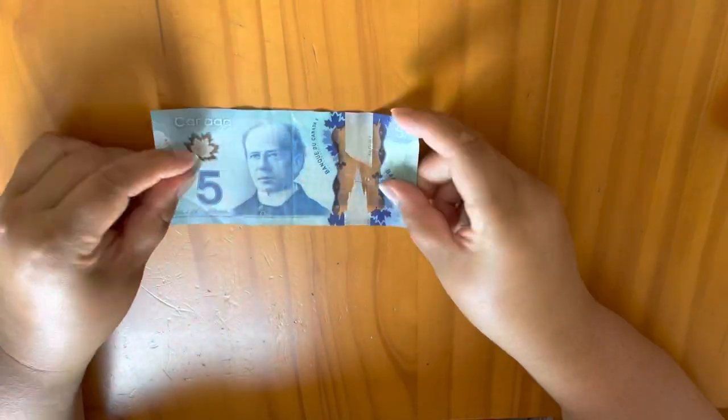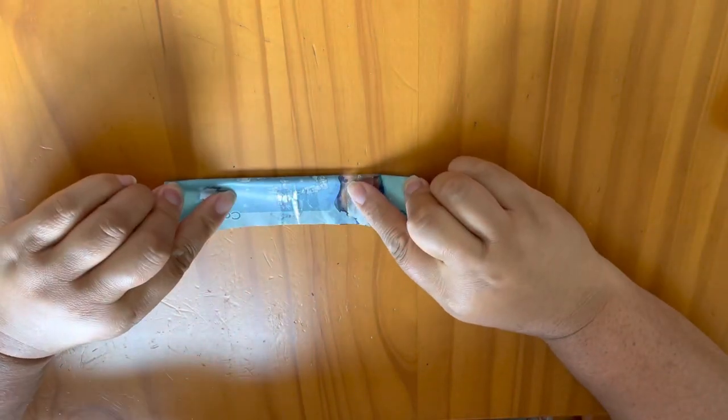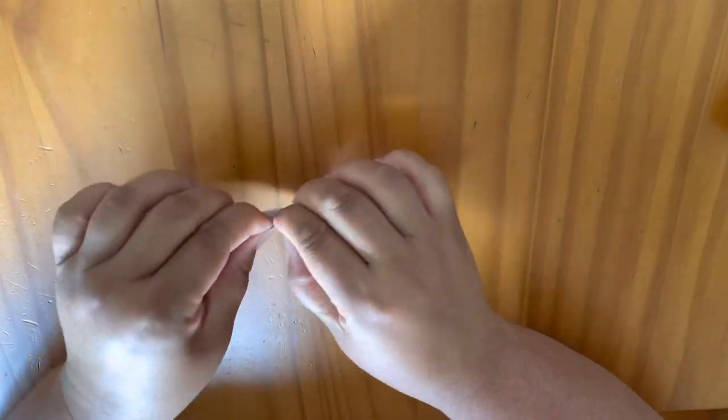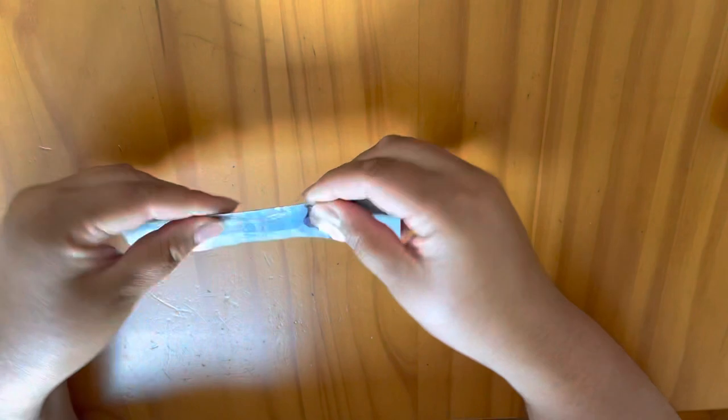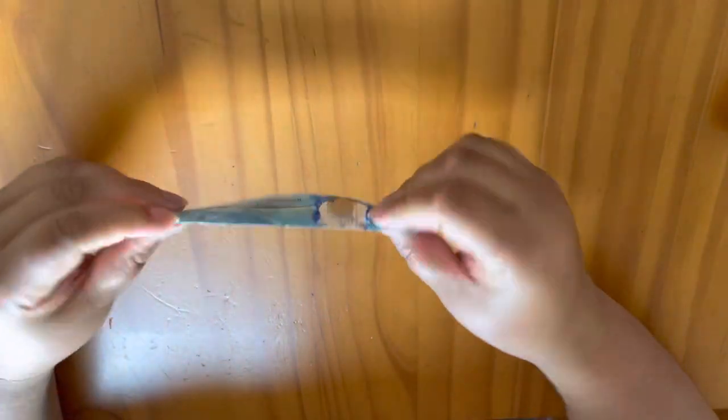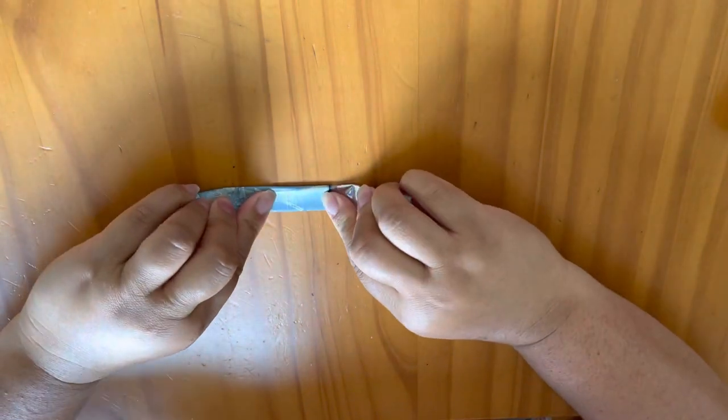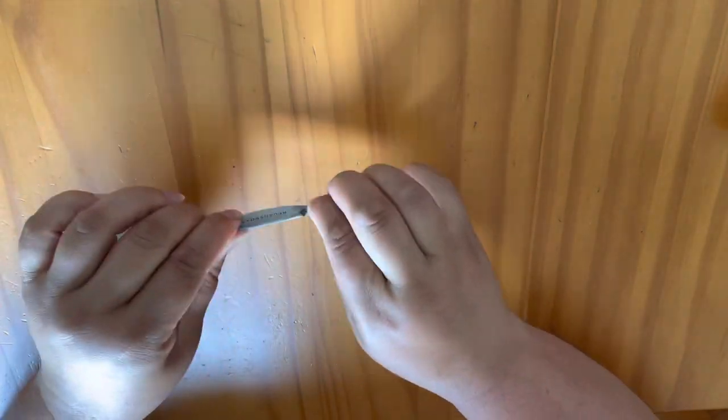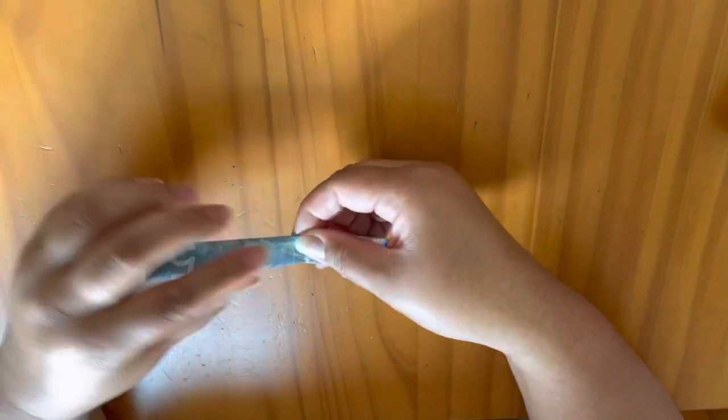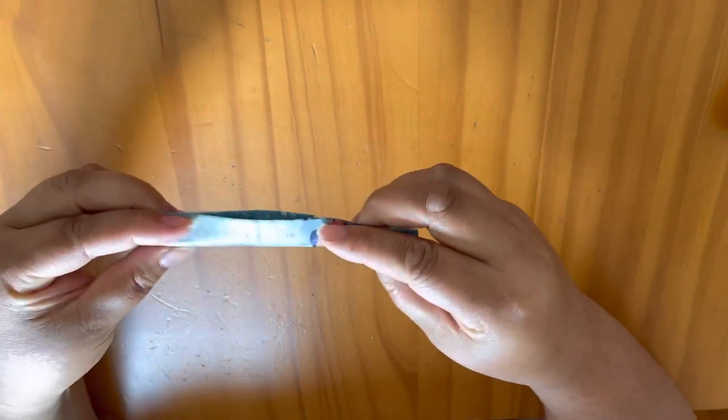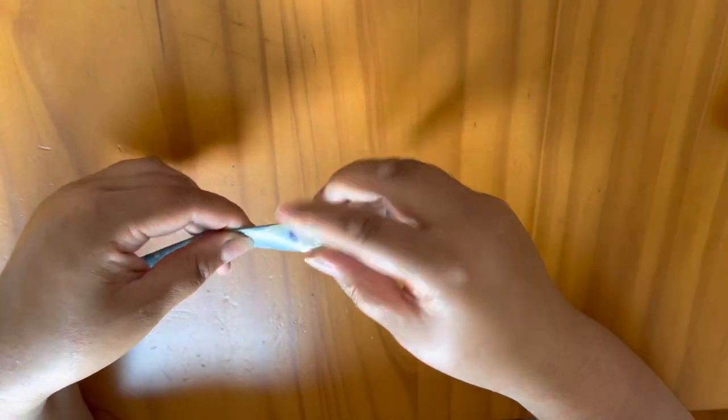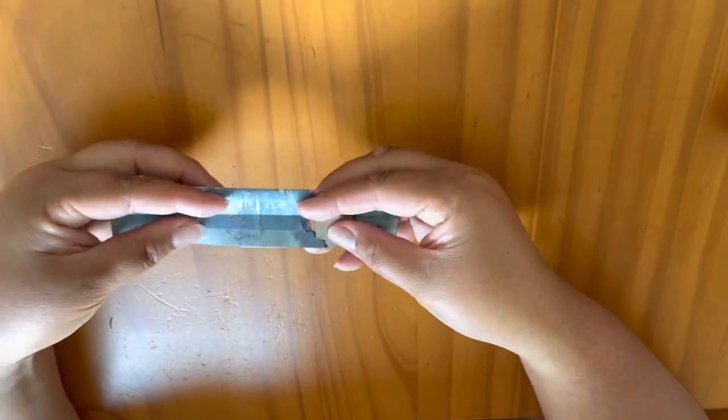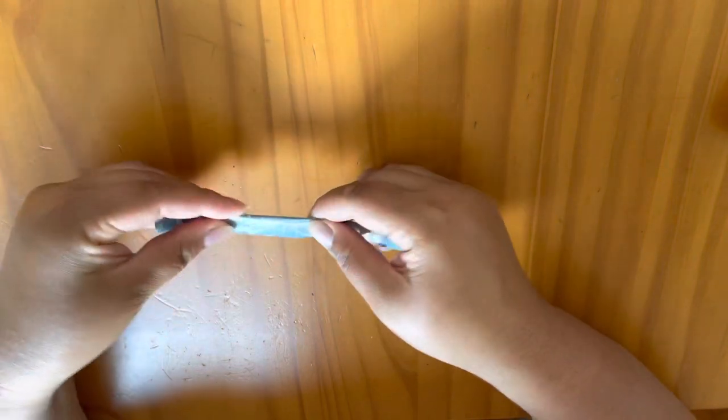We're going to take our $5 bill and go lengthwise and fold it right in half, and press hard on the fold to make sure that the crease stays. Then we're going to fold it again in half lengthways and make sure that the crease is nice and tight. When you open it up you can see there are some folds for equal parts and we'll fold that right back up.